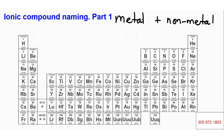Elements in group 1 most times create an ion of charge of positive 1. They have one valence electron and they get rid of that electron, forming a positive ion. Elements in group 2 form a positive 2 charge, because when they get rid of their two valence electrons, they lose two negatives, therefore keeping their positives.